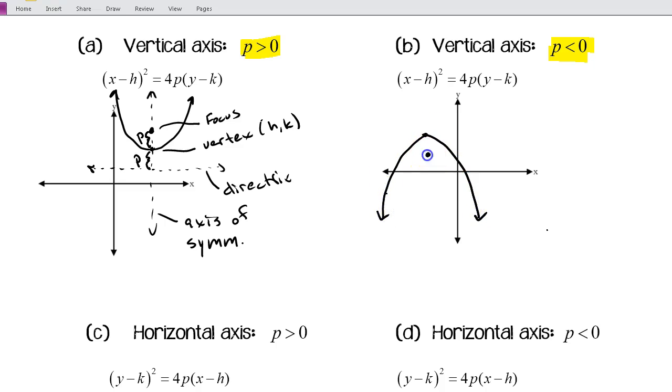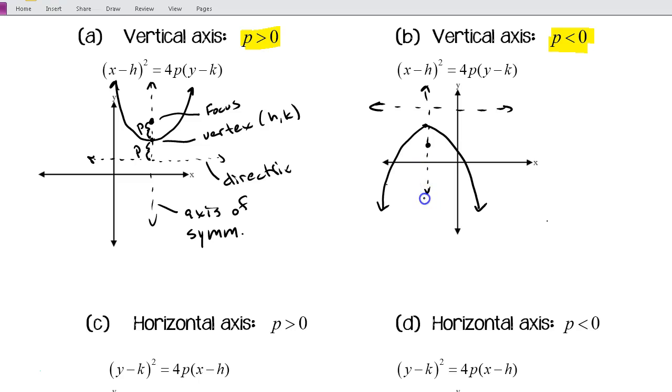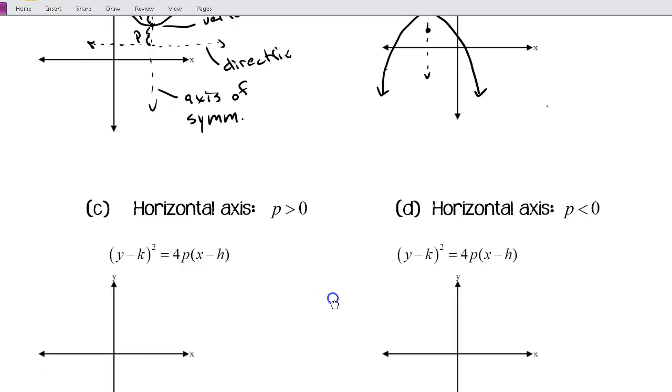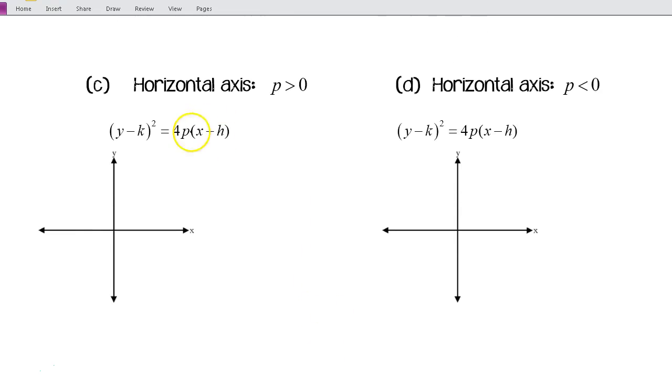We'll have our vertex inside, my directrix outside. These will be the same distance from the focus. We'll have our axis of symmetry. In this case, this p is going to be negative, which means that 4p is also going to be negative. One of the things you'll want to be looking for is whether that coefficient in front of (y - k) is positive or negative, or if we're talking about a horizontal axis, if it's in front of (x - h), whether it's positive or negative.